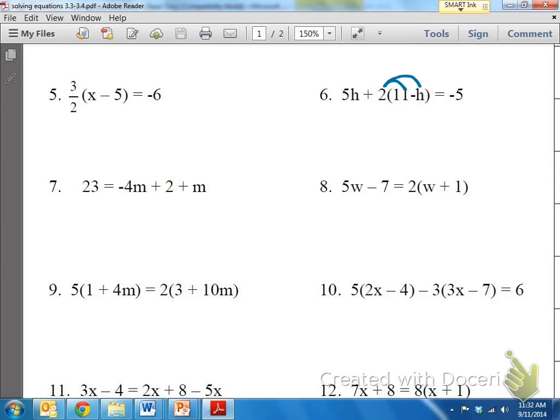Nothing on the outside changes, so 5H will be there. But when we do two times 11, it's 22. And 2 times negative H is negative 2H, and then equals negative 5.